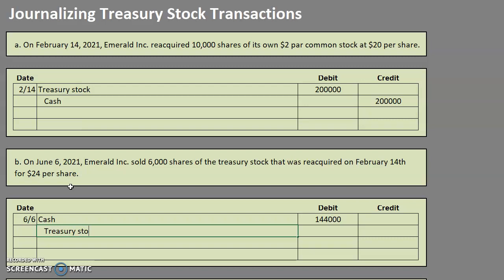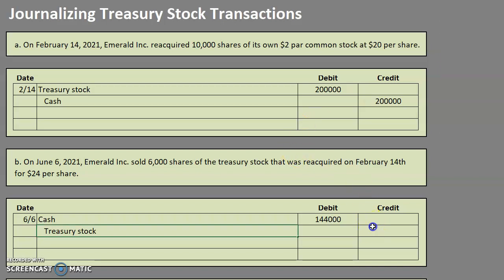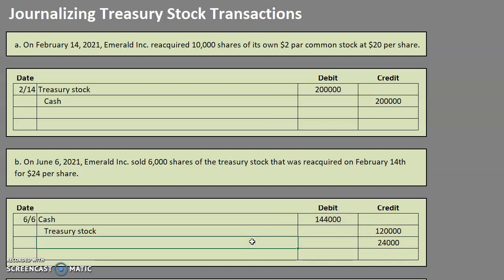As far as what we're selling, we are selling treasury stock, and just as a reminder, that is a contra capital account, so these signs are flipping. To make it go down, we will credit treasury stock. We're selling 6,000 shares, and we always value treasury stock at cost. These 10,000 shares we purchased were valued at $20 per share, so now that we are selling them, we value them at $20 — 6,000 shares at $20 is $120,000. We have a $24,000 credit plug, and the account we use is paid-in capital from sale of treasury stock.